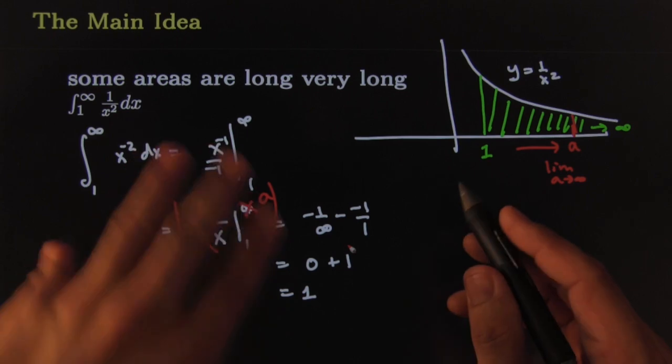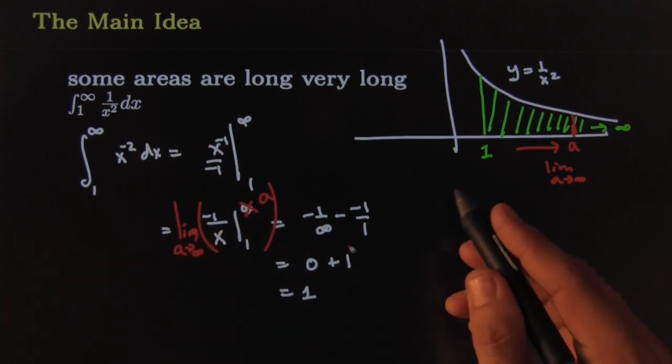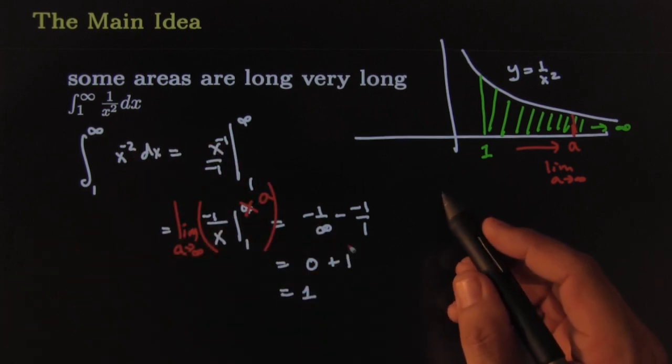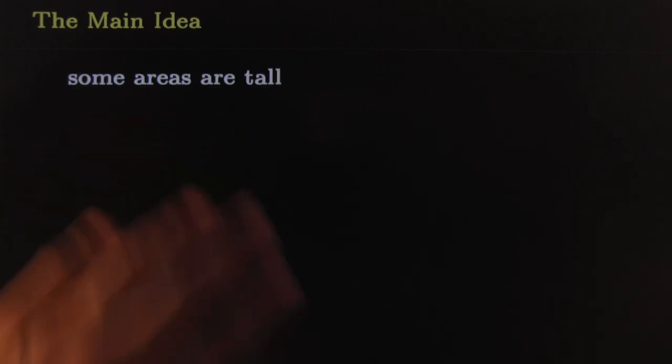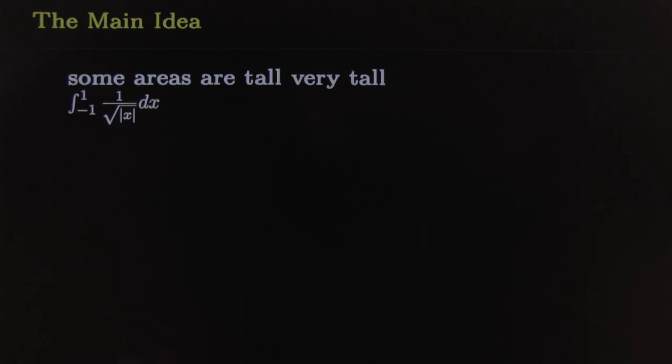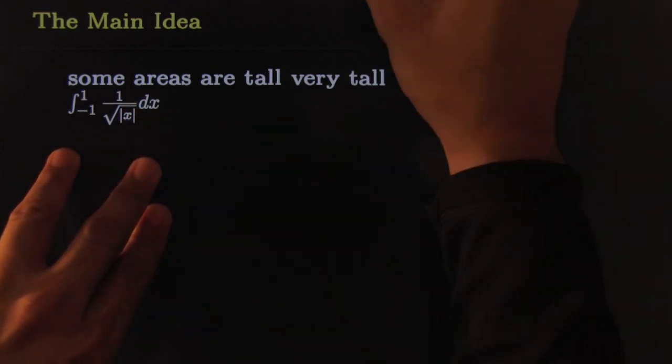That would help you manage the complexity here of the indeterminate form. Just something to keep in mind. All right, let's go on and do another simple example and then we'll take it up a notch or two and do some more interesting ones. Next simple example: another way to rephrase the main idea would be to just say some areas are tall, really tall.